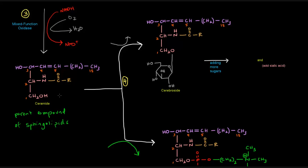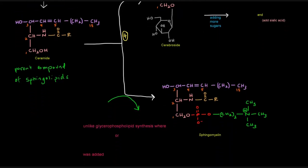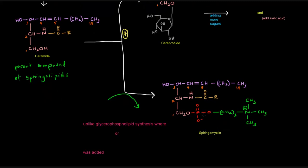Once we have ceramide, the last step is simply to attach the polar head group. We can either have a situation in which the polar head group is some sort of sugar or collection of sugars. In this case, I've drawn glucose here as part of the polar head group. That will give us a cerebroside. Or we can have a phospho-alcohol portion as the polar head group to give us a sphingomyelin.